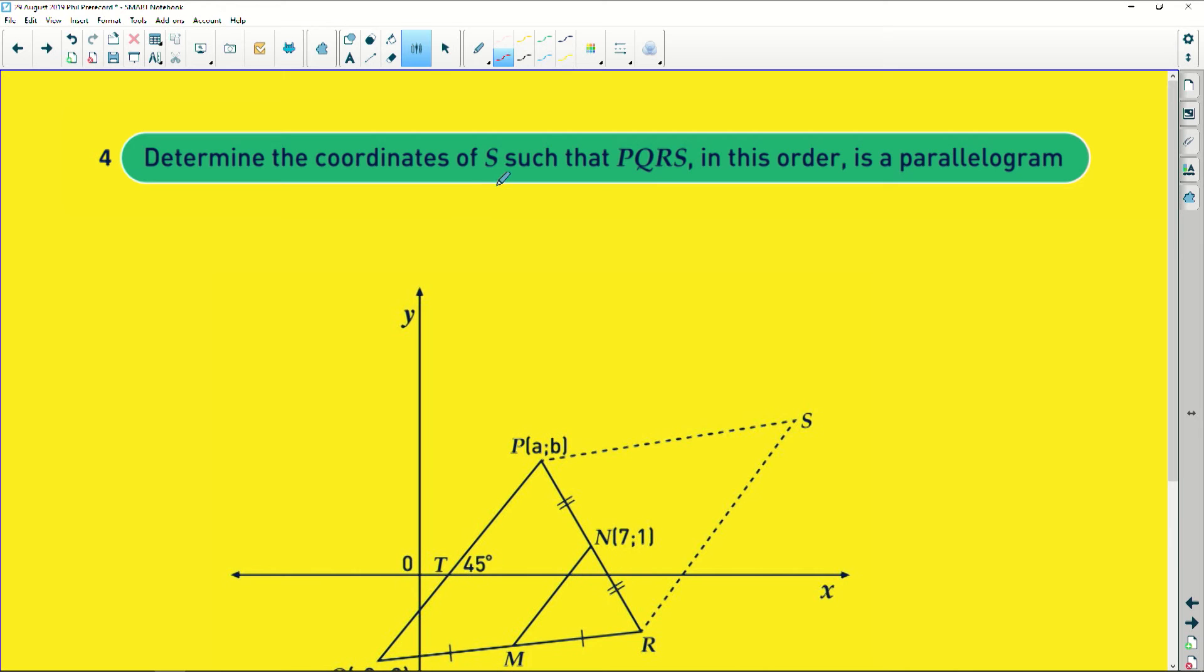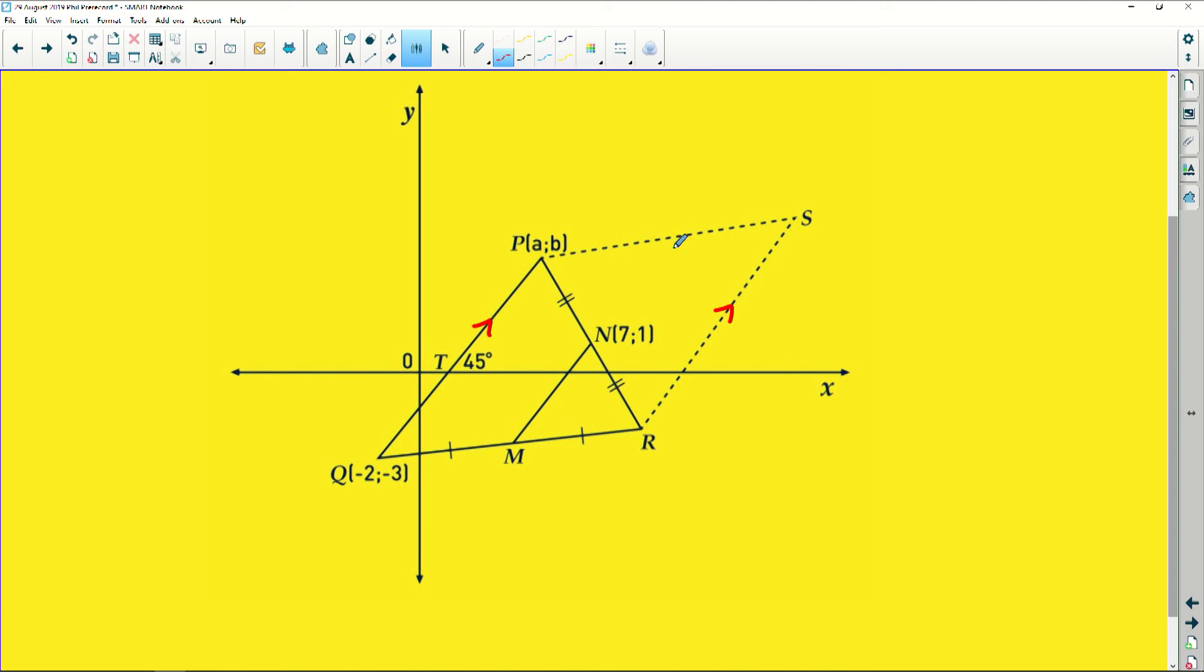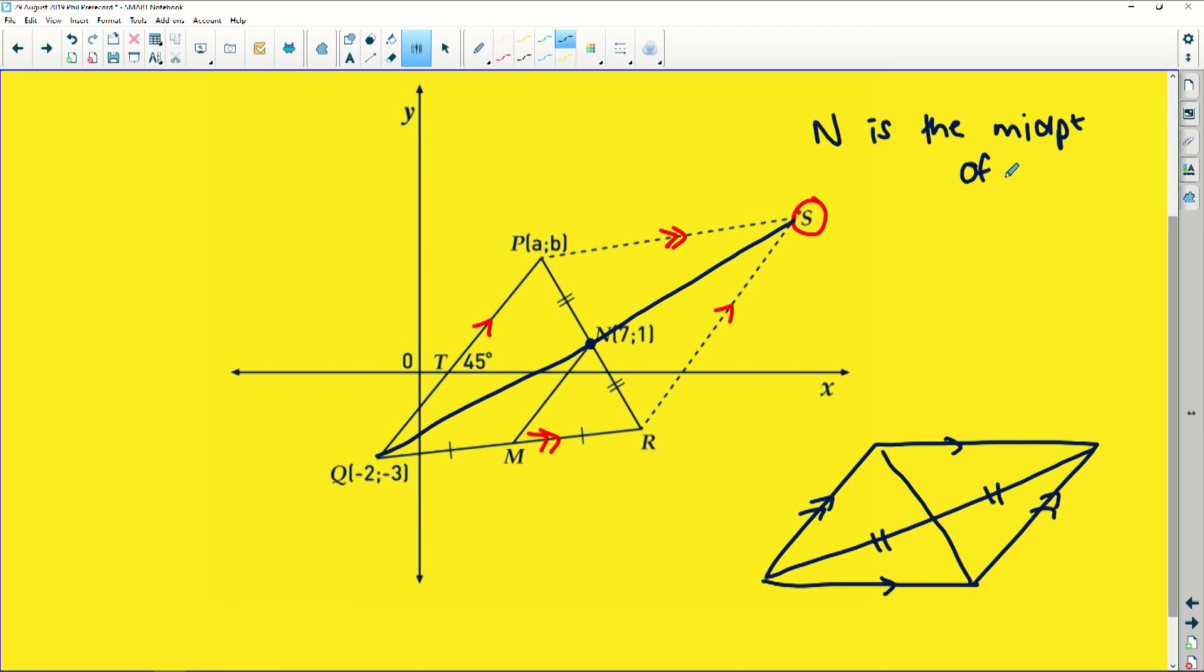Last question says, determine the coordinates of S such that PQRS in that order is a parallelogram. So we're trying to prove or we know that, or we're given that this is a parallelogram. So what do we know about parallelograms? We're trying to find S here. So we could try and find it using a parallel line there and a parallel line there, but we do not have enough information. We have no coordinates there and no coordinates there. So what we need to remember is remember your properties of quadrilaterals. Very important. If we get a parallelogram, remember, very important, that their diagonals bisect each other. So if we look here, this is a diagonal there, which means that that is definitely going to be a point of intersection of their diagonals, which means that N is the midpoint of QS.